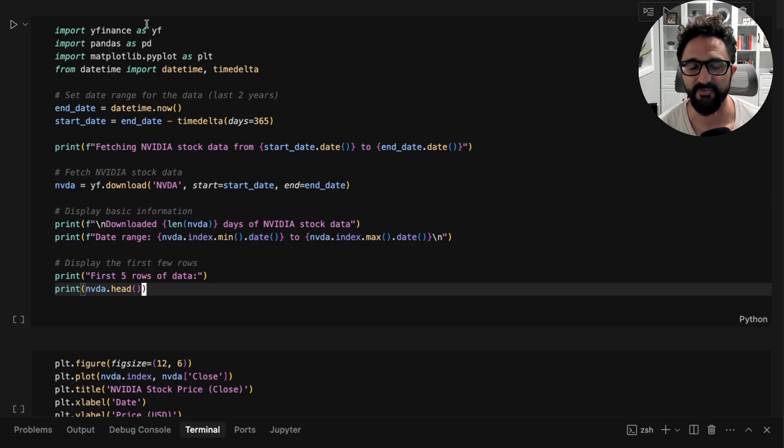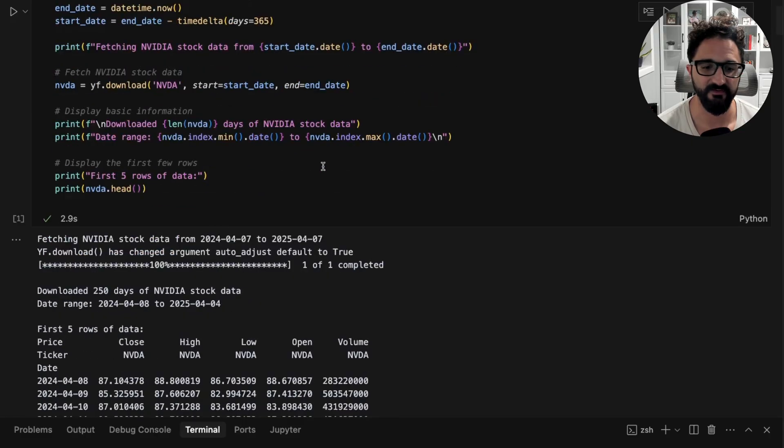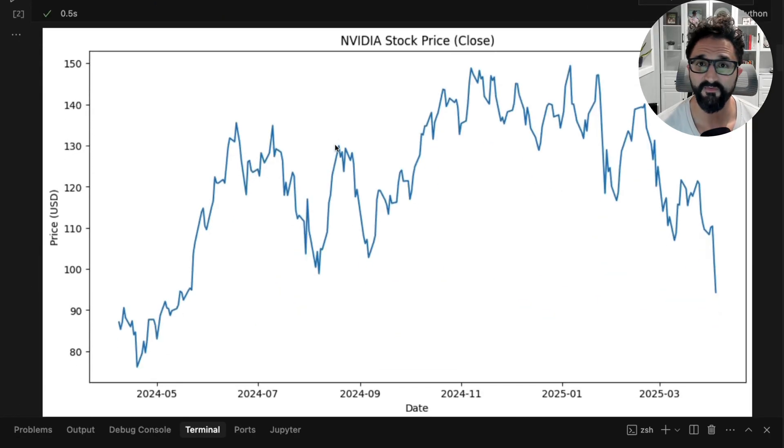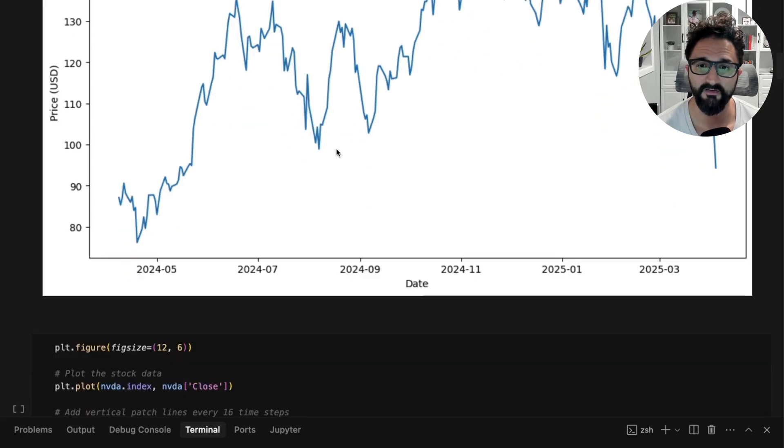Before we compute any attention, we need to take our input and turn it into embeddings. To turn time series into embeddings, we use a technique called patching. First, let's fetch some data. You can see we have NVIDIA stock price here, just the close plotted in matplotlib.